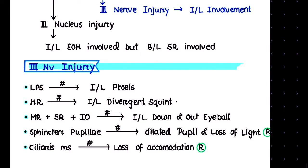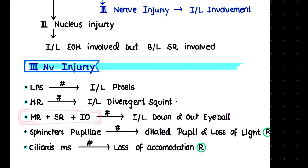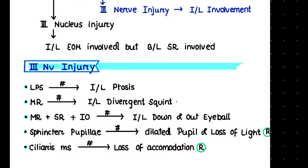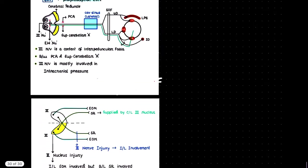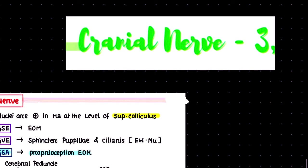Regarding cranial nerve injuries: damage to the nerve supplying the levator palpebrae superioris causes ipsilateral ptosis. Injury to the nerve supplying medial rectus causes ipsilateral divergent squint. Damage to the three muscles supplied by the lower division causes ipsilateral downward and outward displacement of the eyeball. Injury to the sphincter pupillae causes excessive dilatation of the pupil. Injury to the ciliary muscle causes loss of accommodation.